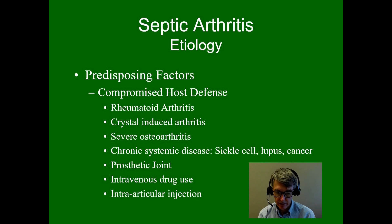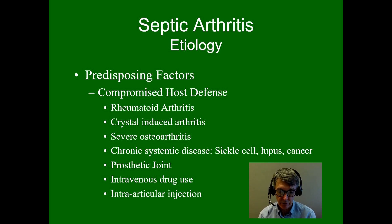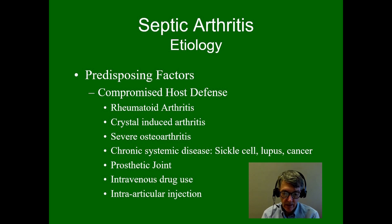Predisposing factors are important. People can have bacteremia for many reasons, but this doesn't necessarily lead to septic arthritis. People at risk have compromised host defenses or a history of previous joint damage. Things such as rheumatoid arthritis — which damages the joint and creates a nidus for infection — or medications used to treat it, such as corticosteroids, cytotoxic drugs, or other immunosuppressive medicines, can predispose to septic arthritis. Crystal-induced arthritis can cause enzymatic strip mining of cartilage, creating a substrate for possible infection.